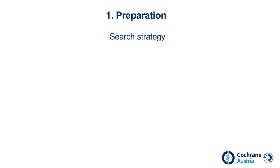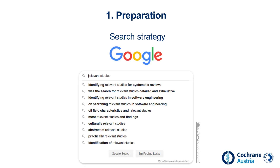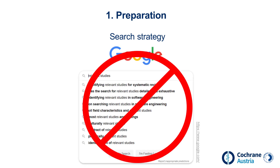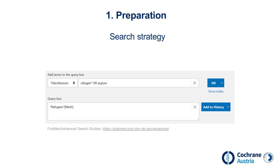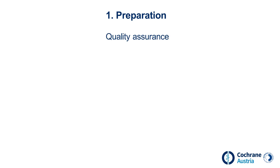The search strategy is the major difference to a non-systematic search. Instead of coming up with search terms on the fly, appropriate search terms for the most important concepts of the research question are selected in advance. Then they are linked to create a complex search query. Before the actual systematic search is performed, quality assurance measures are important. These aim to ensure that the search strategy has no logical, conceptual, or spelling errors.